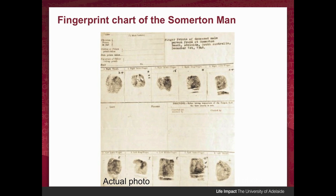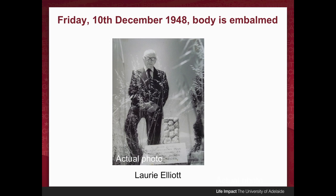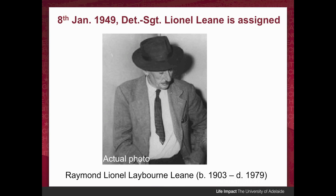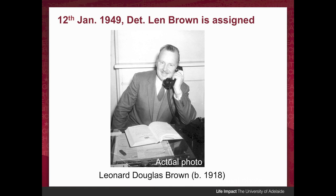Jimmy Durham also took a fingerprint chart of the Somerton man. On the 10th of December, Laurie Elliot was brought in to embalm the body, because people were still coming into the mortuary to view it and check if it was a long-lost relative — there was a never-ending stream of them, and that kept going for about six months. Then on the 8th of January, Detective Sergeant Lionel Lean was assigned to the case to try to make some breakthroughs, and colleague Detective Lynn Brown was also assigned on the 12th of January to help.